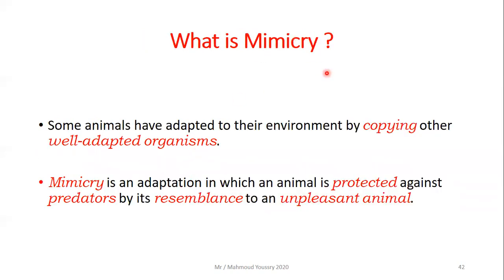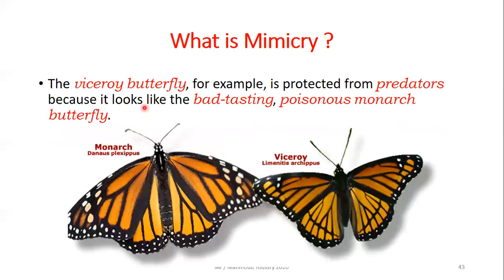Then we have mimicry. Some animals have adapted to their environment by copying other well-adapted organisms. Mimicry is an adaptation in which an organism is protected against predators by its resemblance to an unpleasant animal. For example, the viceroy butterfly is protected from predators because it looks like the bad-tasting, poisonous monarch butterfly. The viceroy resembles the monarch butterfly - this is mimicry.